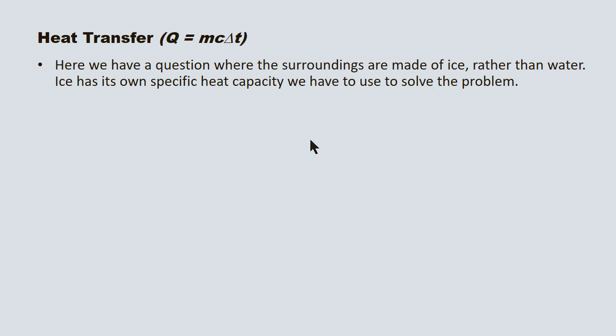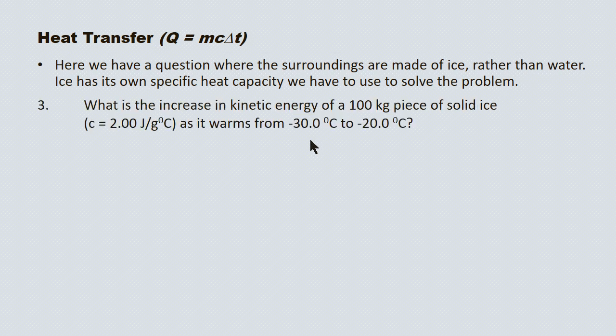Here we have a slightly different example where the surroundings are made of ice rather than water, which gives rise to a different specific heat capacity value. What is the increase in kinetic energy of a 100 kilogram piece of ice, with a specific heat capacity of 2.00 joules per gram degrees Celsius, as it warms from minus 30 to minus 20? There's a further complication: our mass unit is in kilograms, so it has to be converted to grams.